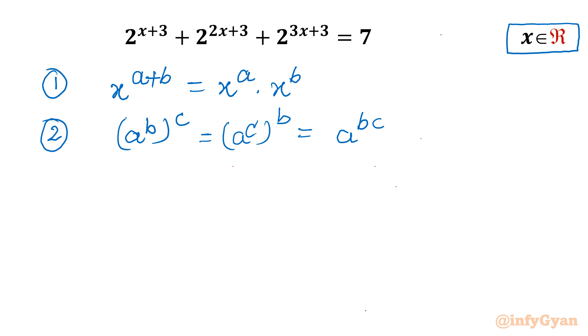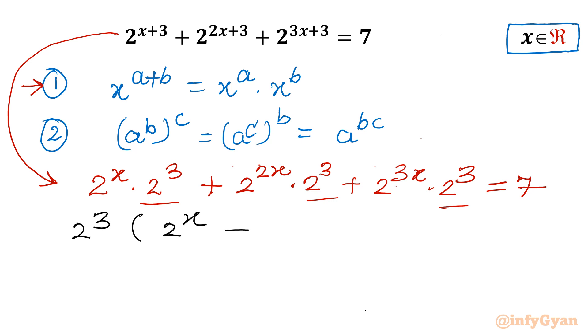Let's apply both the properties in our problem. So I will begin with property number 1. So I can write our equation as 2^x·2^3 + 2^(2x)·2^3 + 2^(3x)·2^3. RHS is 7. Now you can see 2^3, 2^3, 2^3, so 2^3 is common. So I will write 2^3 common.